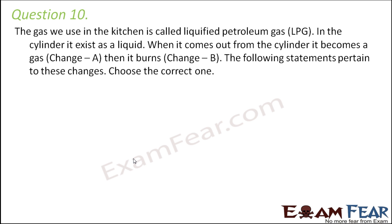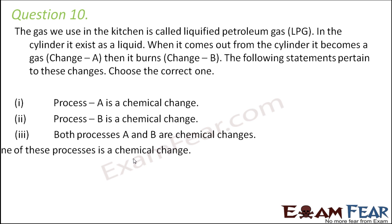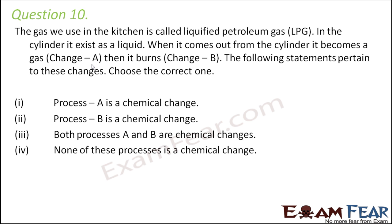Question number 10: The gas we use in the kitchen is called liquefied petroleum gas or LPG. In the cylinder it exists as liquid; when it comes out from the cylinder it becomes a gas, then it burns. Change A refers to the liquid LPG becoming gaseous — the composition remains the same, it just changes state from liquid to gas, so change A is a physical change. When it burns, heat and light are released and new substances are formed, so burning is a chemical change.